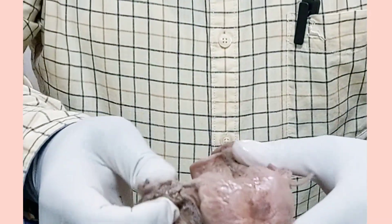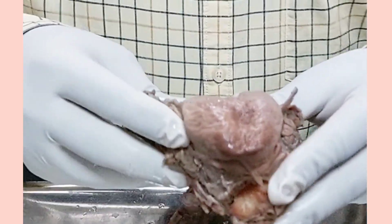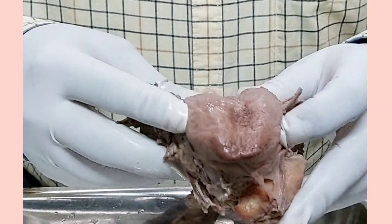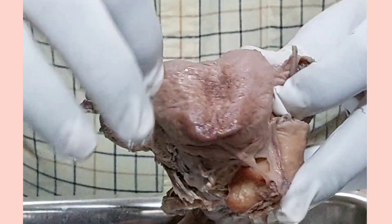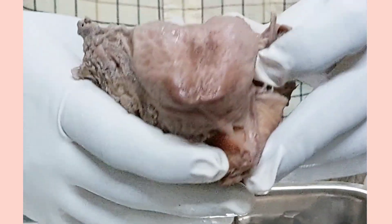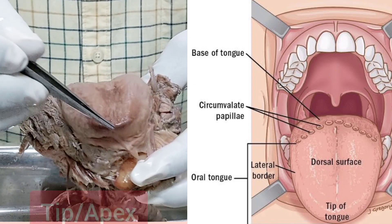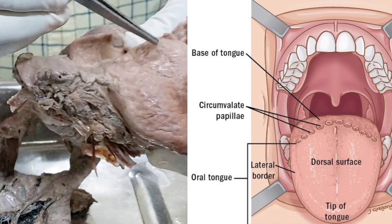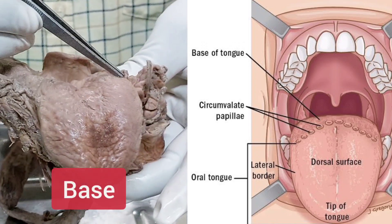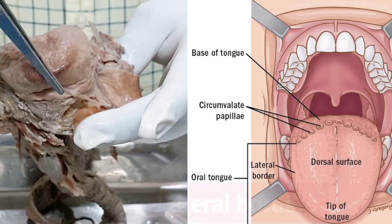First of all, the tongue. This is the tongue — it is a muscular organ inside the oral cavity, with part on the posterior side. This tongue has different parts. This anterior part is called the tip of the tongue. The posterior side — rather the posterior one-third — is called the base of the tongue. These two sides are called the lateral margin or lateral border.